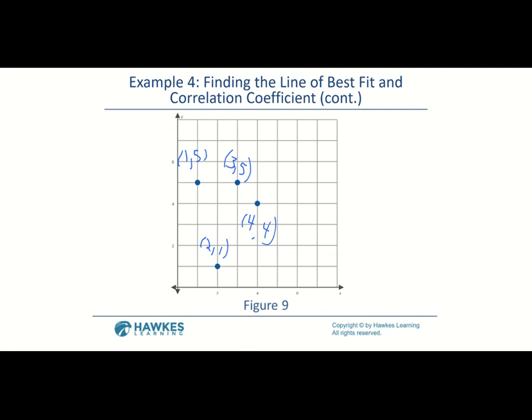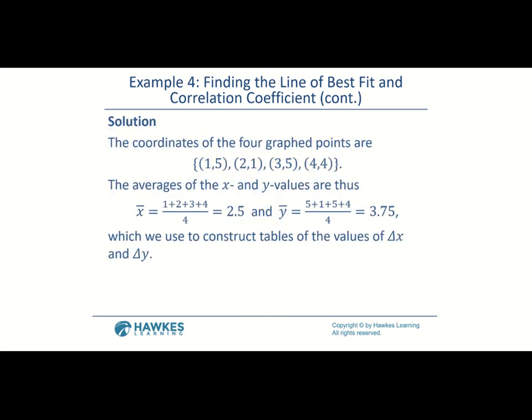First, find the average for your x values and the average for your y values. Pause the video, find the averages, then come back and check. The average for the x values is 2.5 and the average for the y values is 3.75. Now use those averages to find delta x and delta y for each point.